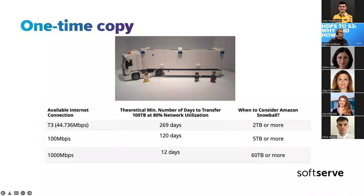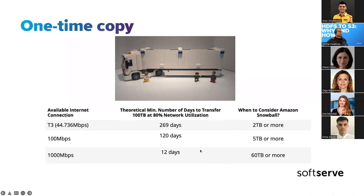A truck comes to your company, you load the data into the storage in the truck, and it goes back to the Amazon office, and they upload it to an S3 bucket. What you have to consider is the network topology of your company and how efficient the connection to the cloud is. This table is from the official Amazon webpage. You should definitely consider the Snow family if you have a lot of data, it's a one-time copy, and you don't care about increments — you just want to move the data and you already have processing in the cloud.